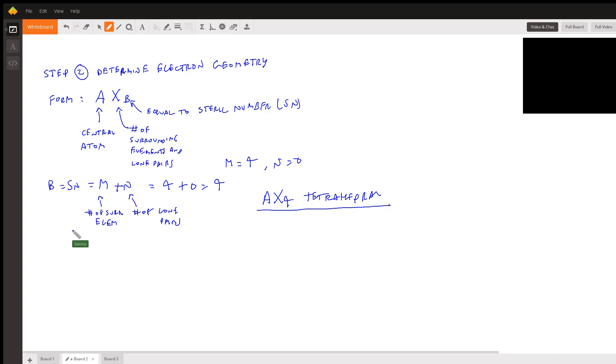Now let's go to step two. Step two is to determine the electron geometry. So the form for the electron geometry is AXB.